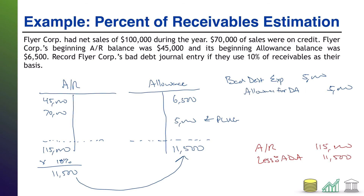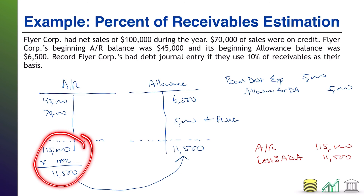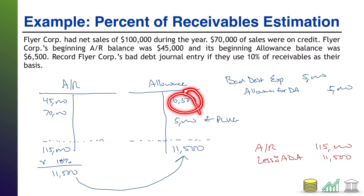If you're familiar with accounting for bad debts using the allowance method, you'll recognize this as the estimation journal entry. This is how we come up with the estimated valuation of bad debts — it's a percent of receivables adjusted for what we've already recorded.